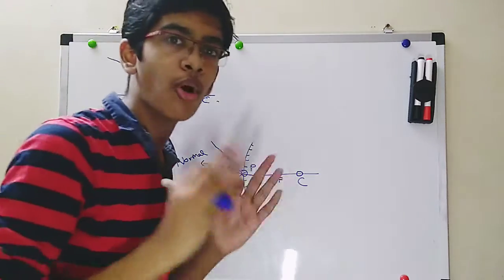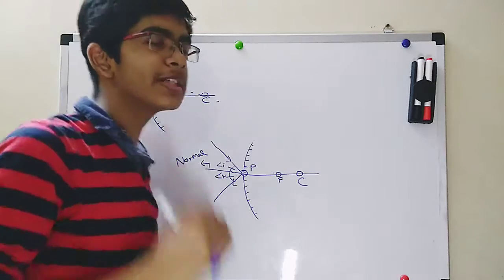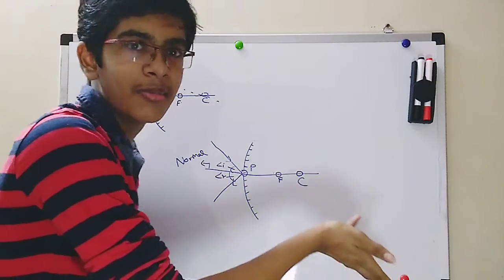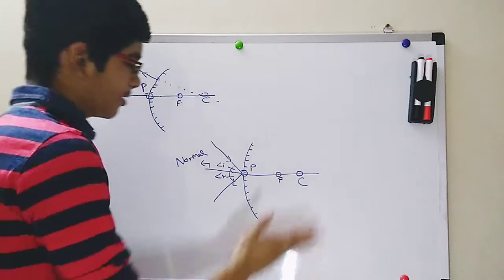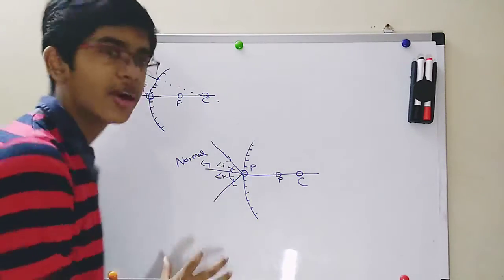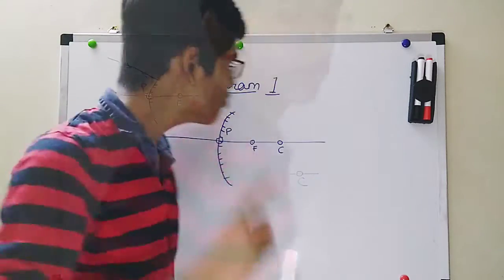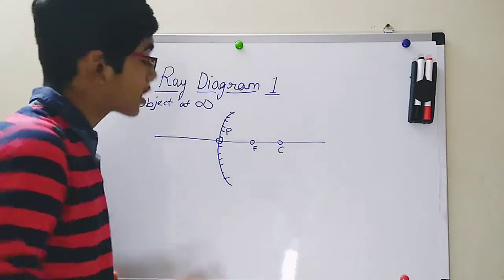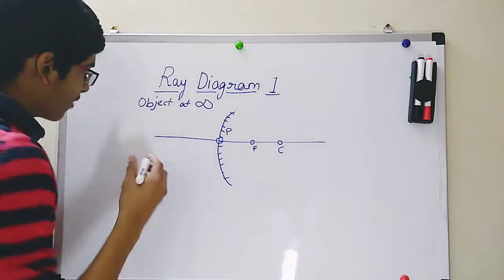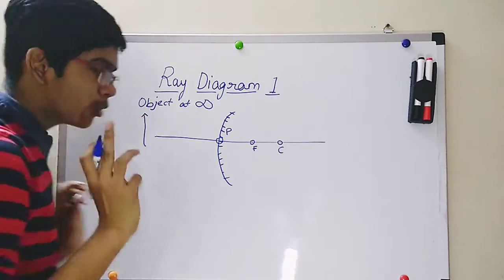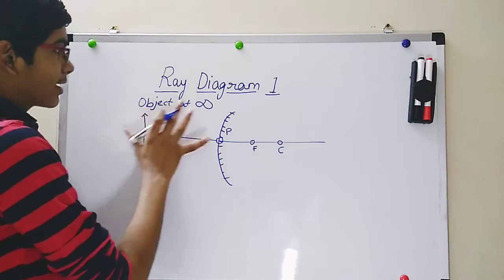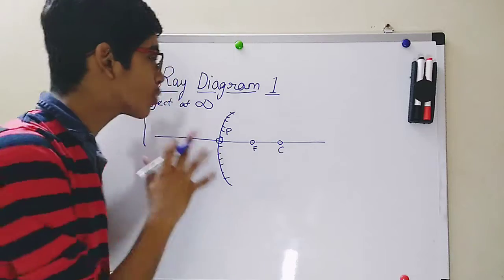Now we understand all the rules in terms of a convex mirror. The best part of convex mirror ray diagrams is that there are only two ray diagrams. Because all the special points are behind the mirror, there are no specific positions to keep the object. There is only infinity and anywhere between infinity and the pole in front of the mirror. For ray diagram one, the object is kept at infinity — and infinity means any farthest point. One assumption we make is that all light rays coming from an object at infinity will be parallel to the principal axis.